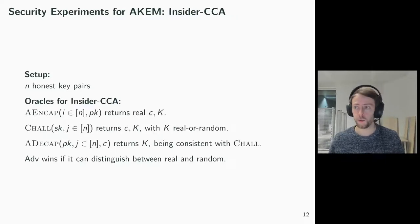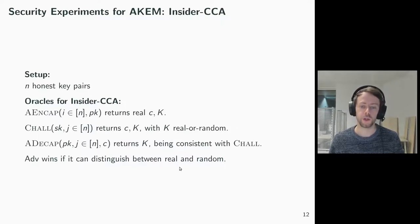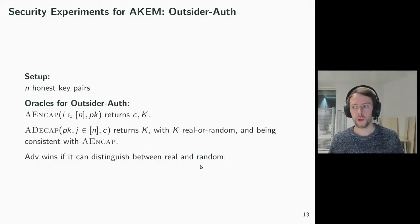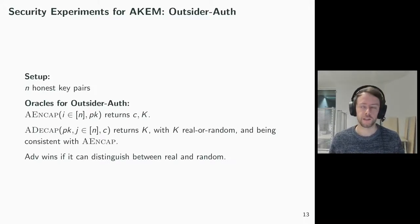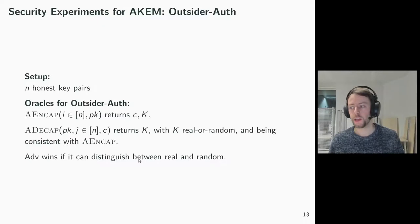For the insider CCA notion, we expose a challenge oracle such that the adversary can choose the sender secret key. And here it is the challenge oracle that will replace the shared secret by a random value in the ideal version. Again, the adversary wins if it can distinguish real and ideal version. For outsider authentication, we want to express that the adversary cannot forge a ciphertext between two honest key pairs. We express this by having the decapsulation oracle replace the shared secret by a fresh random value, being consistent with the encapsulation oracle. So the adversary could detect this change if it was actually able to forge a ciphertext.